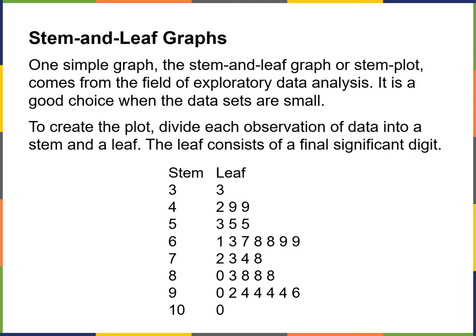To create the plot, all you have to do is divide each observation of data into a stem and a leaf. The leaf consists of the final significant digit. So what we're seeing here in this stem plot is a list of exam grades.